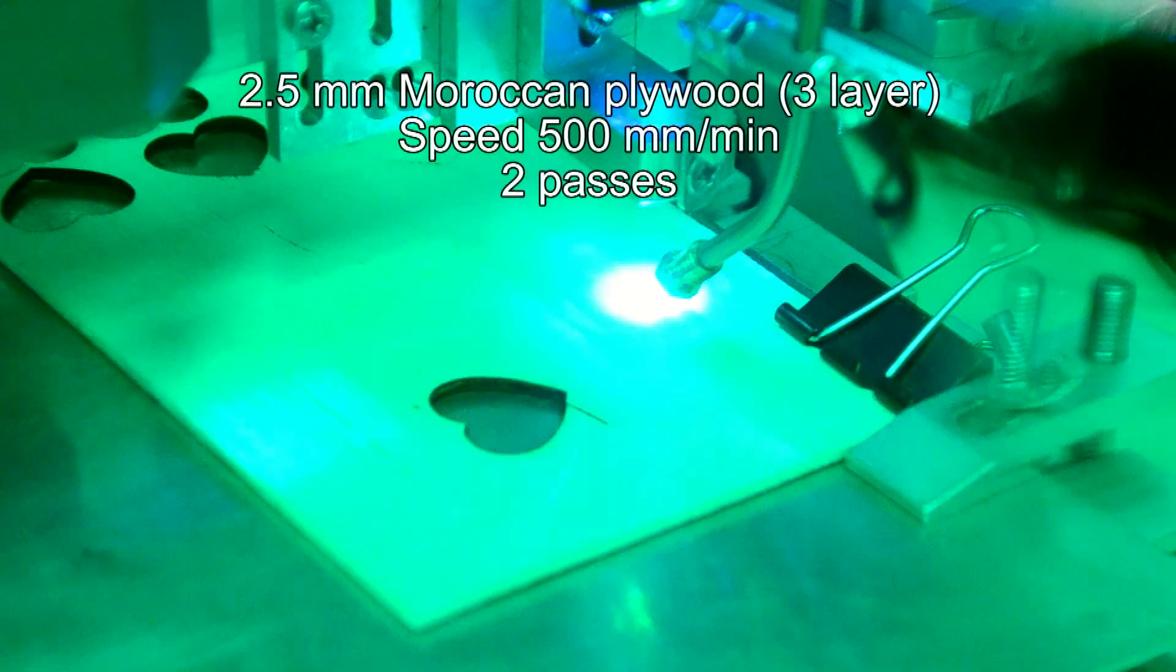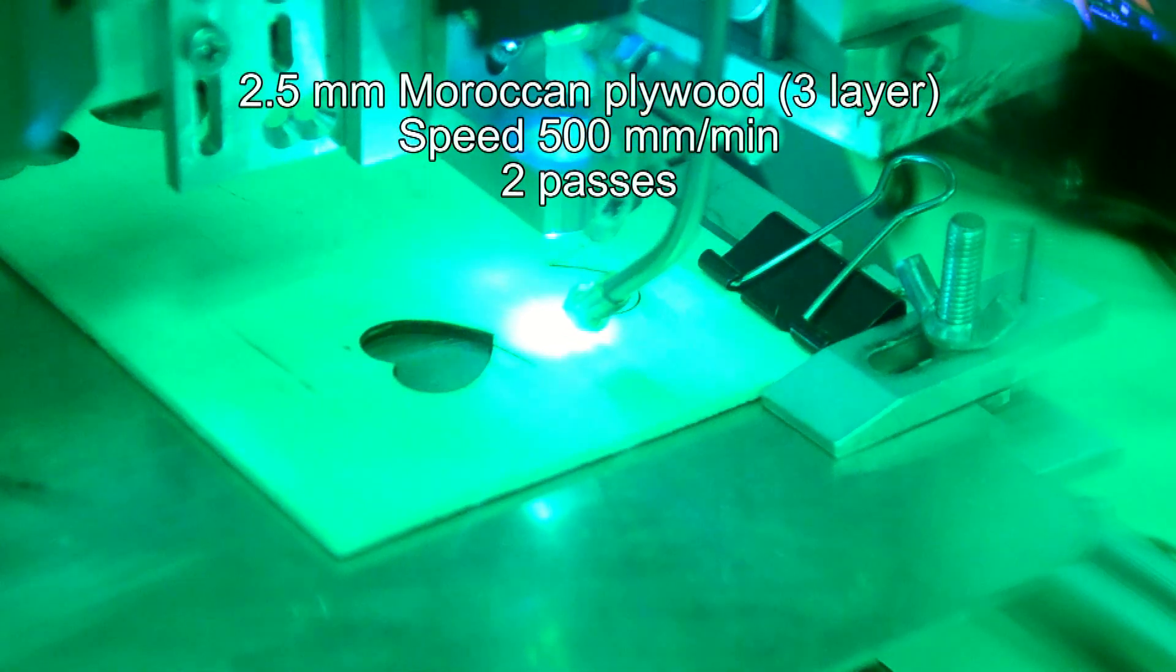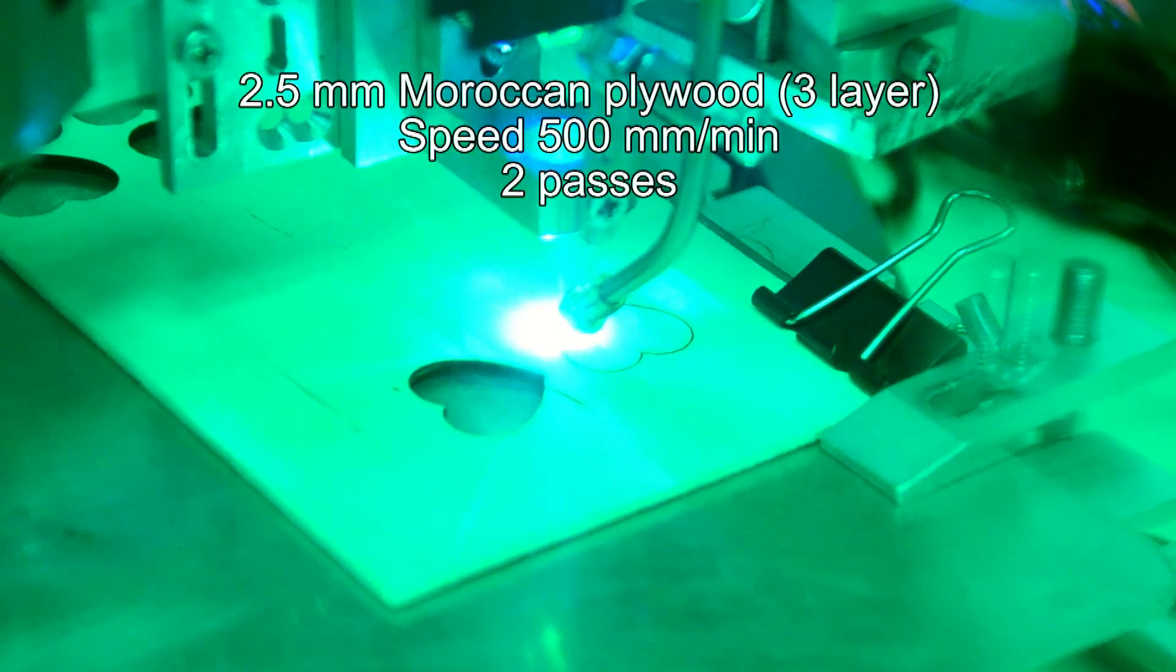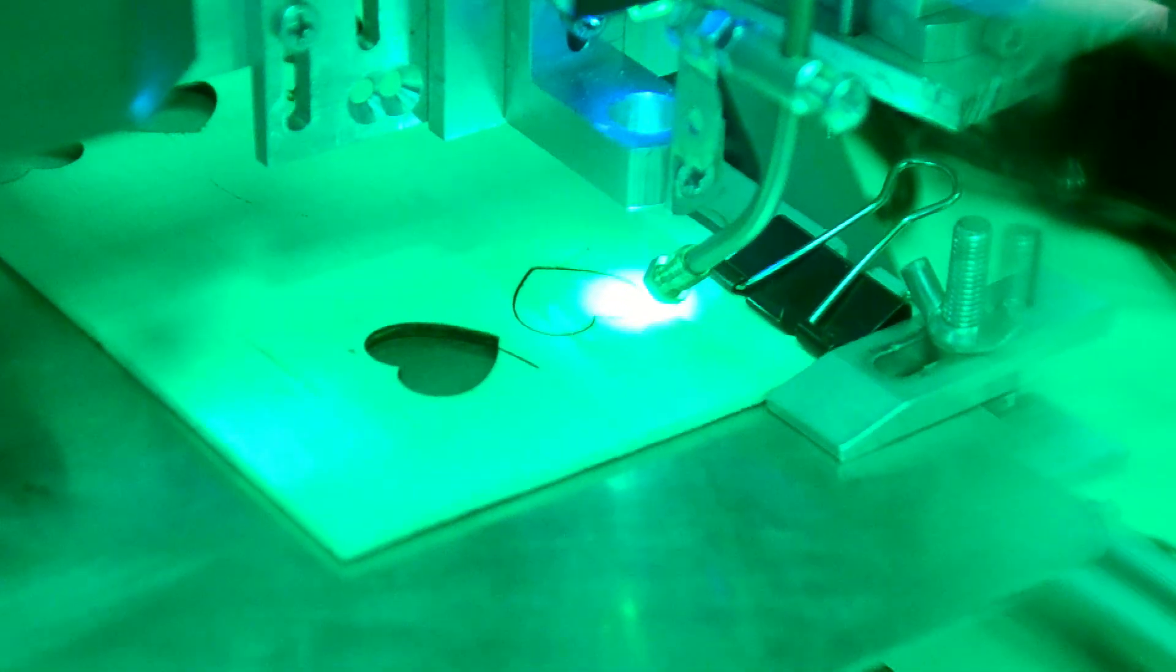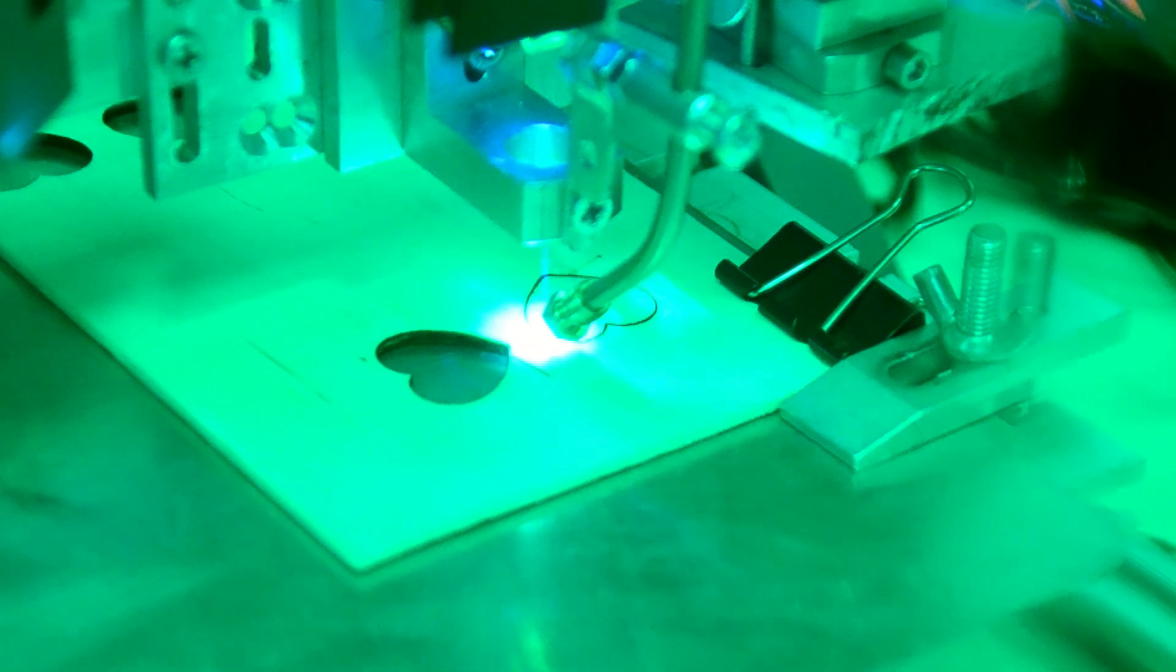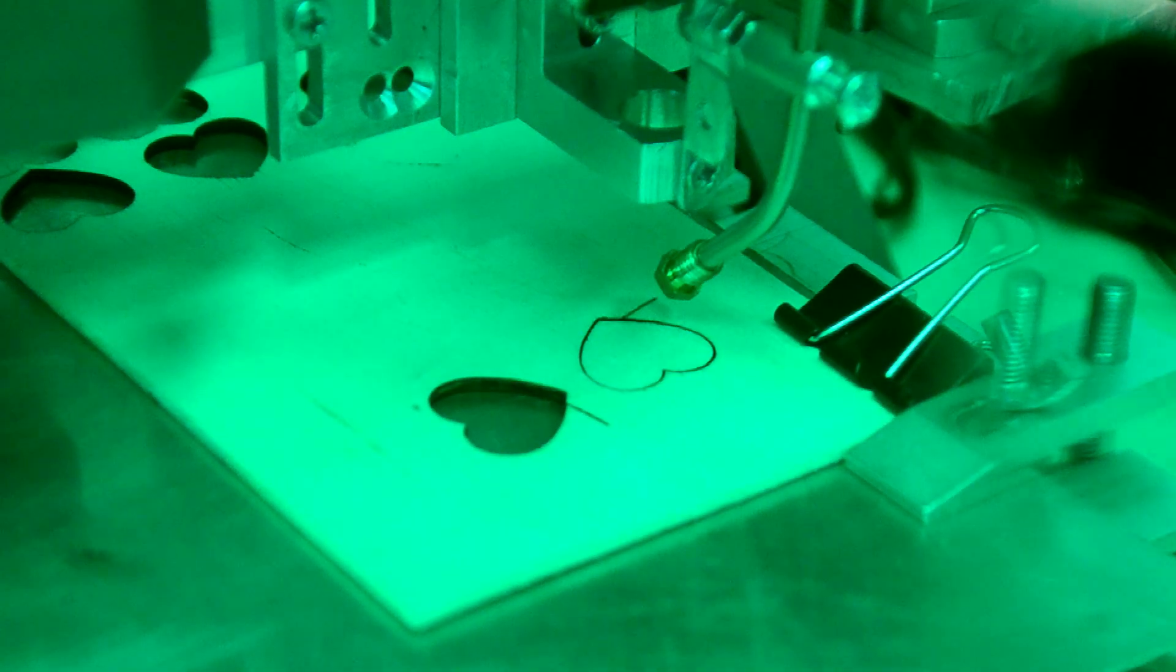Now we are cutting 2.5mm American plywood, also at the same speed. This plywood, or we call it laser ply, is quite soft and it's not a strong material. And you can see the result.